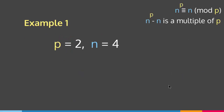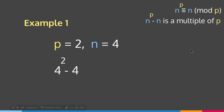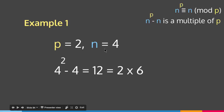Let me give you an example. Suppose we have p = 2 and n = 4. As you can see, our prime number 2 divides our natural number 4. Then by Fermat's Little Theorem, n to the p minus n has to be a multiple of p. So n to the p minus n equals 4 squared minus 4, which equals 12, because 4 squared is 16 and 16 minus 4 equals 12. And 12 is a multiple of 2.